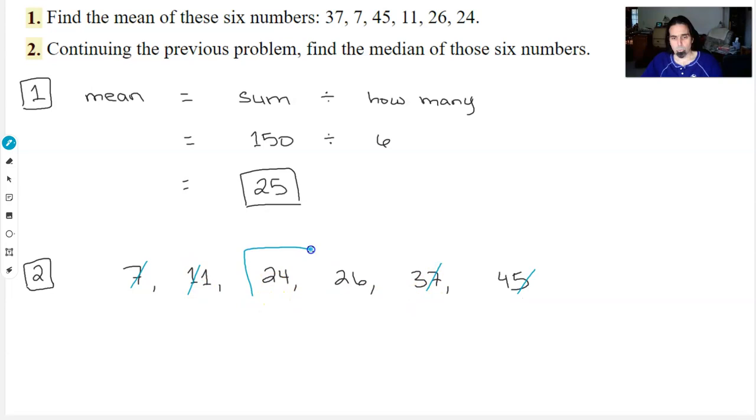There's two in the middle this time. So we're going to take the mean of those, add them together, and then divide by 2. So 50 divided by 2 is again 25. It worked out the same.